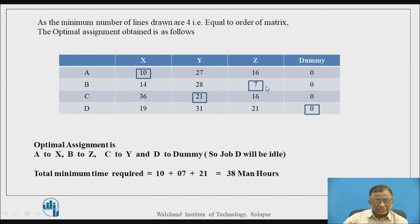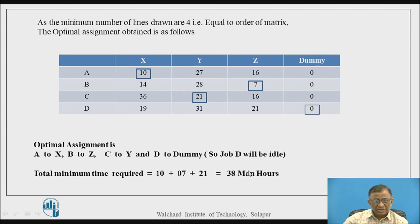The optimal assignment is: job A to X, job B to Z, job C to Y, and job D to the dummy person. Since the dummy person does not actually exist, the job allocated to this person will not be completed — it will be idle. Only 3 workers are available, so 3 jobs will be done. The total minimum time is 10 + 7 + 21 = 38 man-hours. This is the optimal solution to the unbalanced assignment problem.